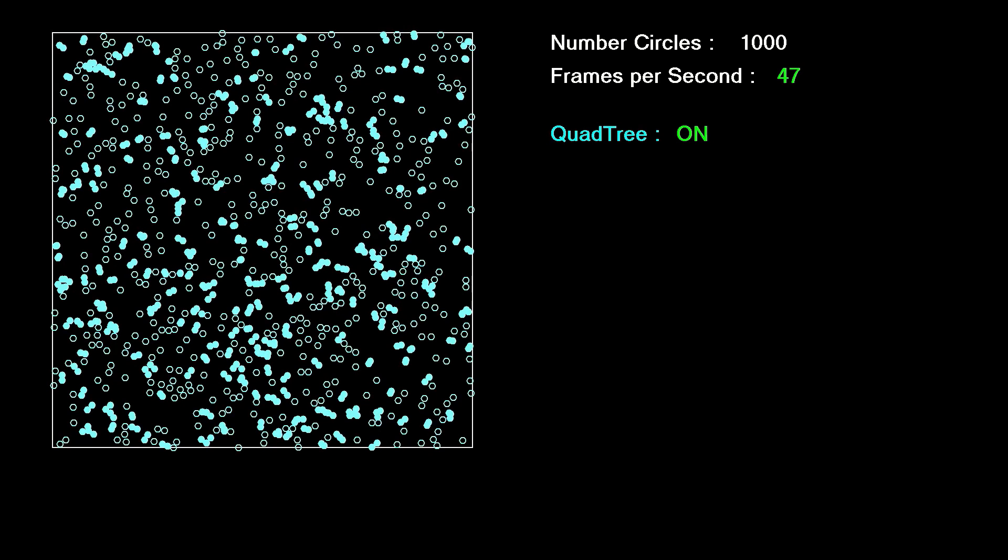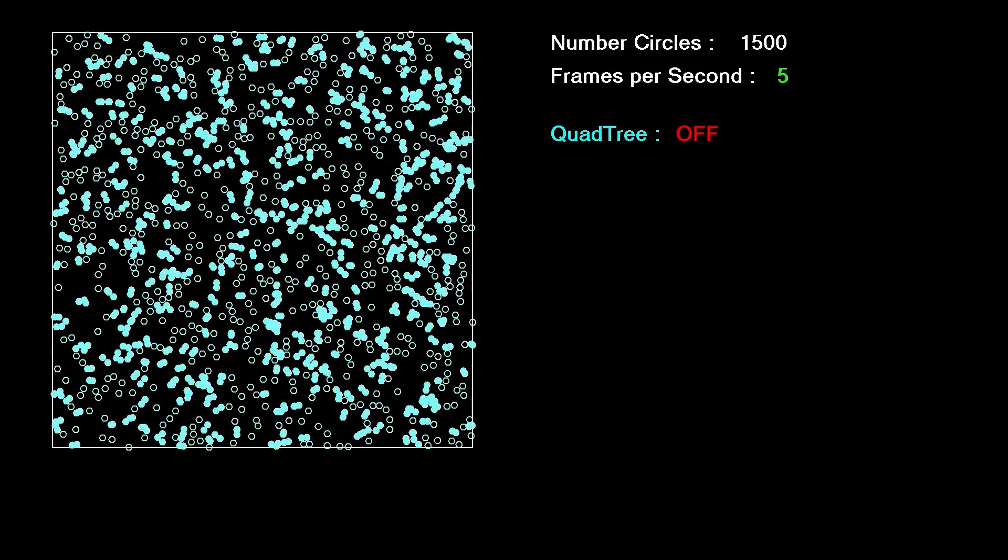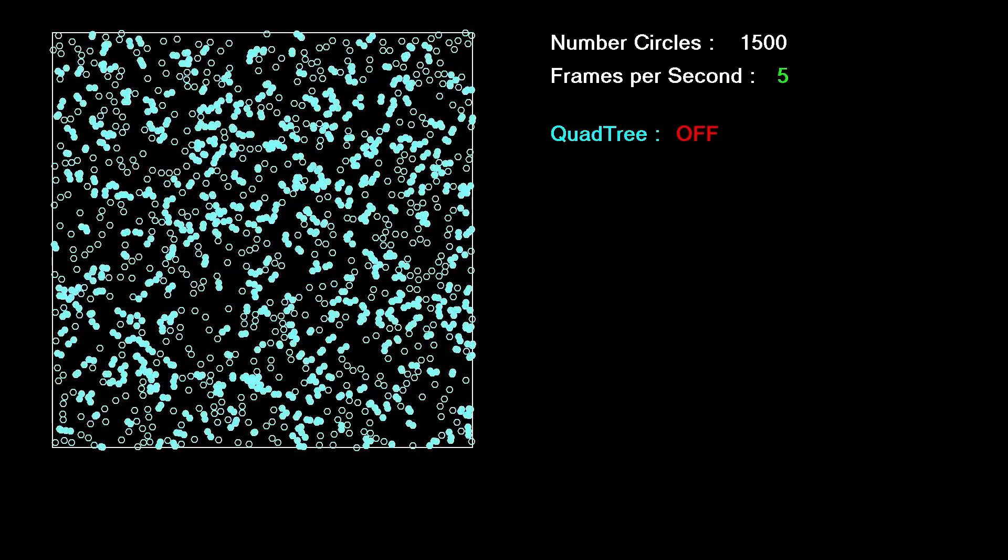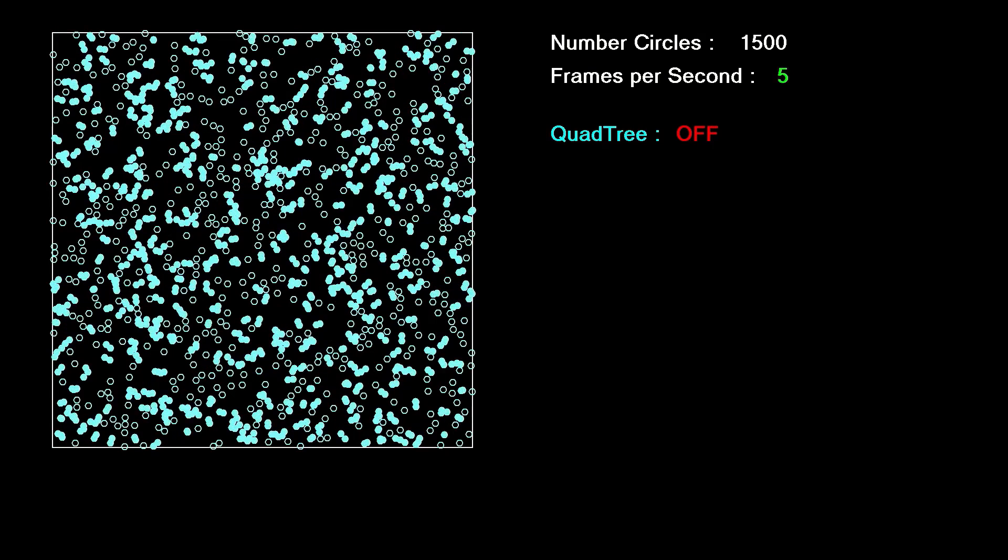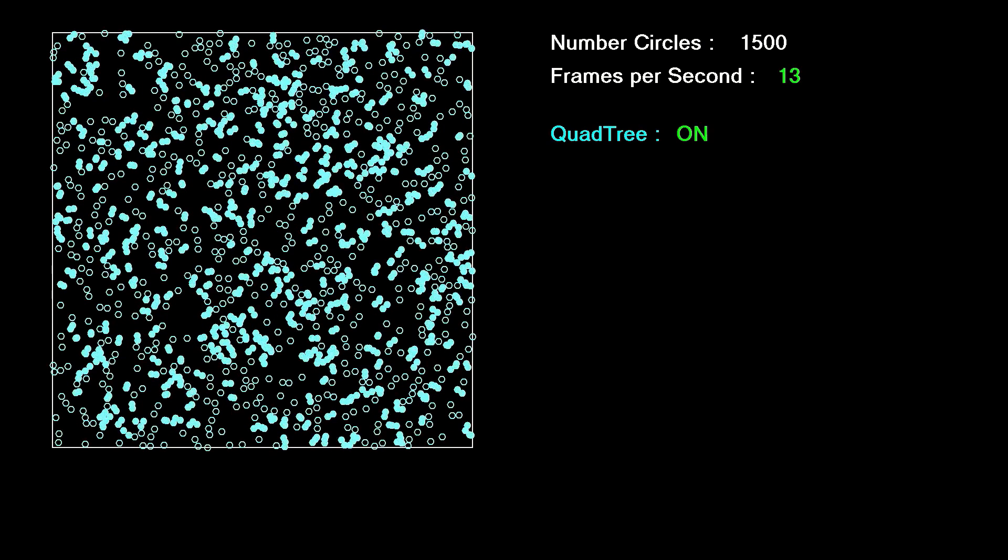And as these circles aren't moving, I only need to update the quad tree once to populate the object. I have the option of switching the quad tree on or off, and display the frames per second each method is managing to achieve. As the number of circles goes up, this will decrease, and you can see the difference between the two approaches. By the time it gets to 1500 circles, well, the basic approach is struggling to achieve 5 frames per second, but the quad tree method is still managing a number in the mid-twenties.